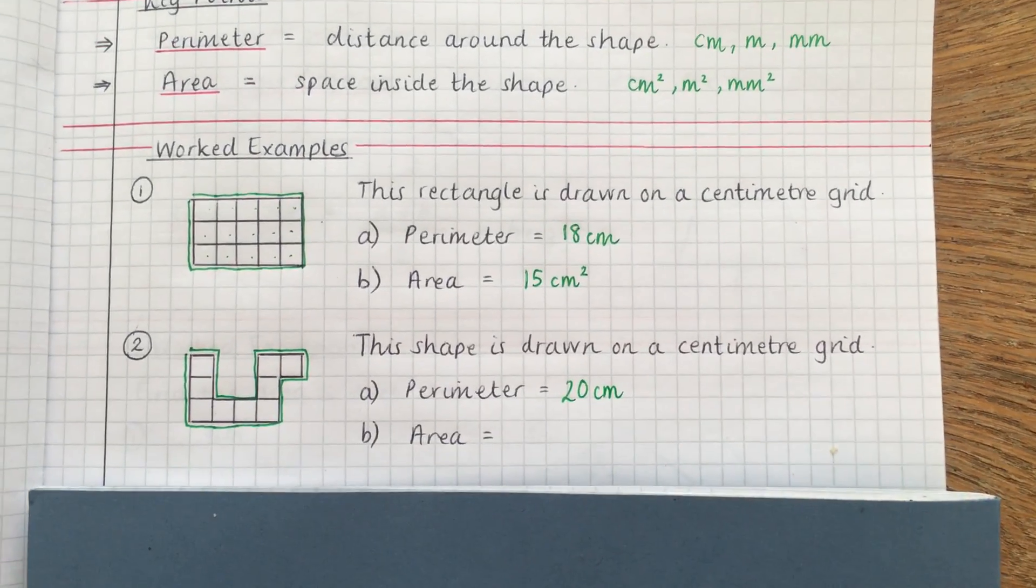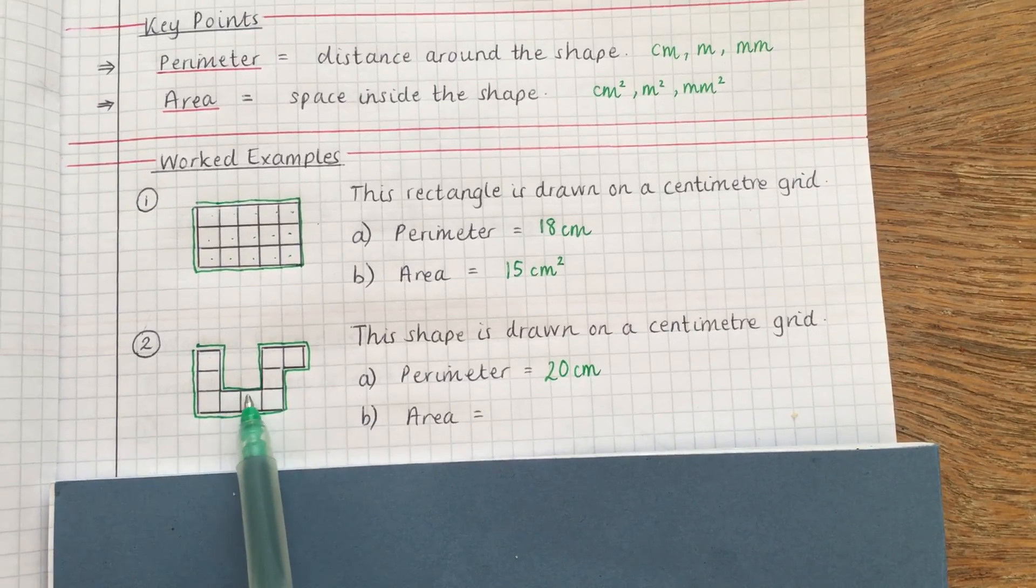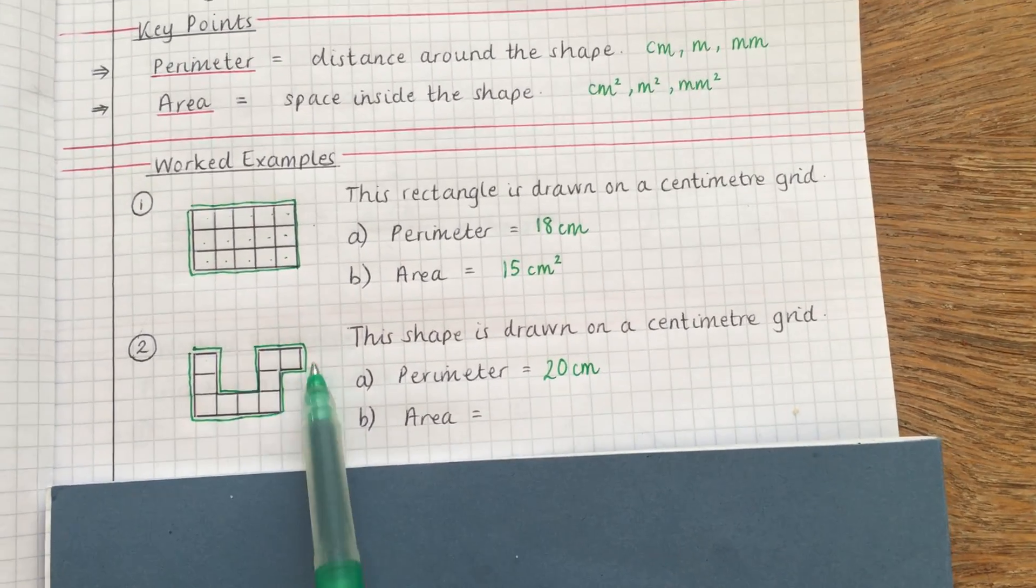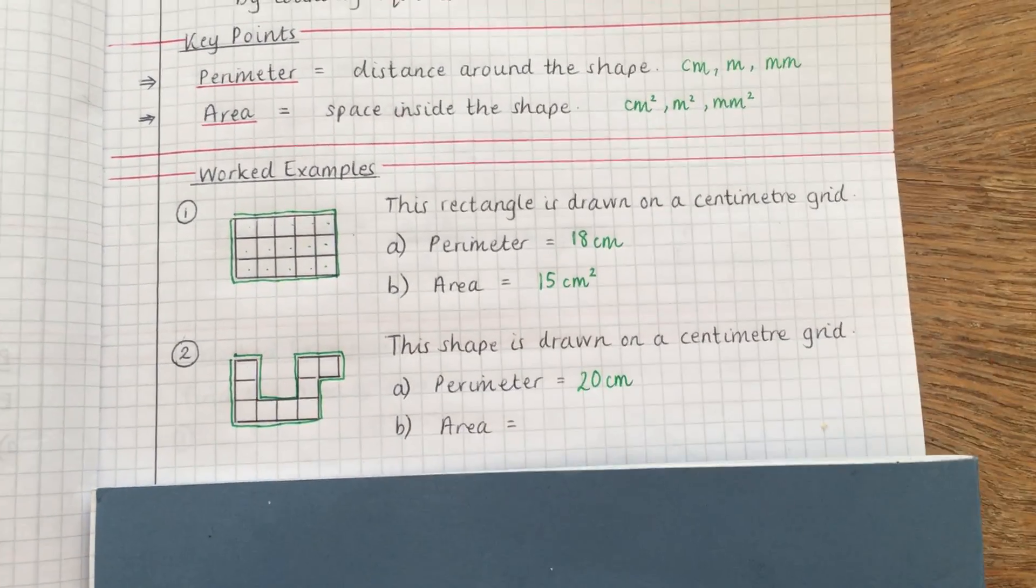Now the reason people often get that wrong is because they count the boxes. So they'll go one, two, three, four, five, six, seven, eight, nine, and that's not right, that is the area. So that's where it's important that you're going around the outside with a pen or a highlighter.